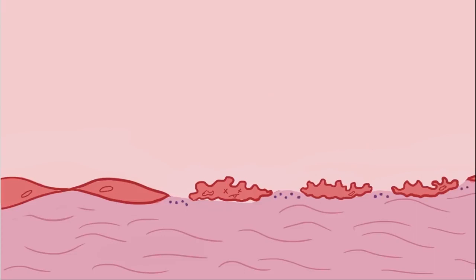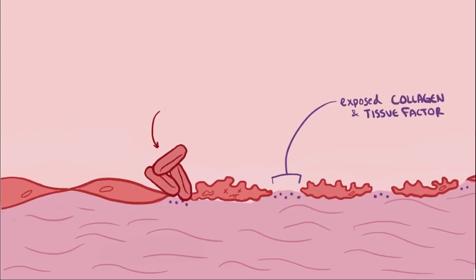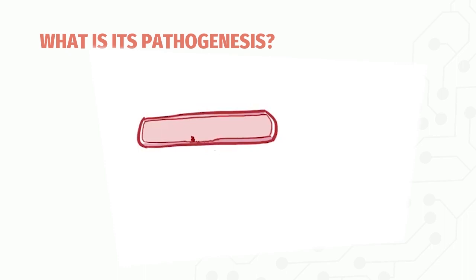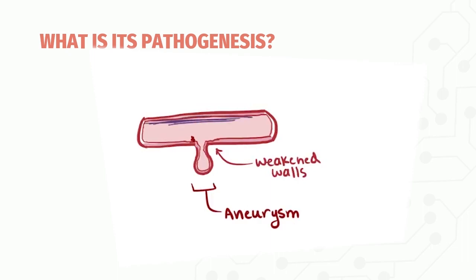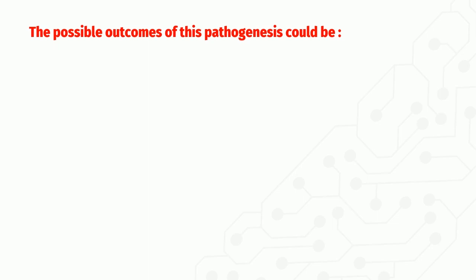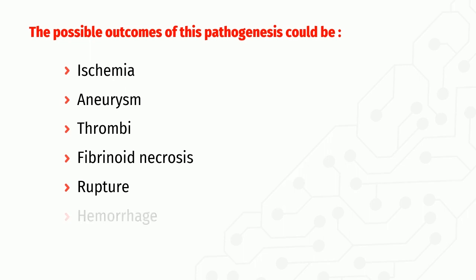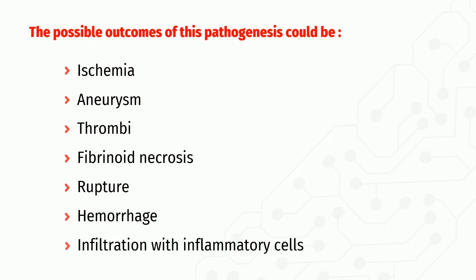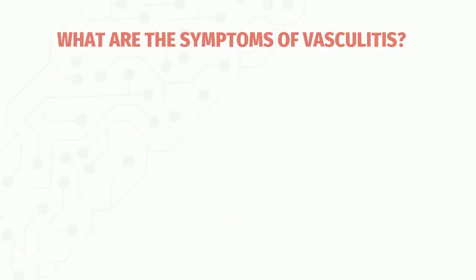Once the endothelium is damaged, almost all vasculitis diseases progress in a similar way. The damaged endothelium exposes underlying collagen and tissue factor, increasing the chance of blood coagulation. The vessel walls become weaker, making aneurysms more likely. As the vessel wall heals, fibrin is deposited, making it harder and stiffer. Possible outcomes include ischemia due to occlusion, aneurysm, thrombi, fibrinoid necrosis, rupture, hemorrhage, and infiltration of the vessel wall with inflammatory cells.